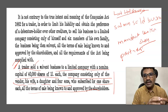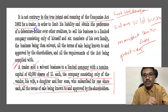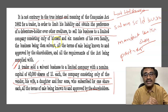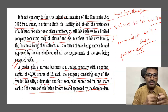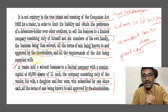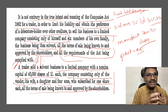Going back to the facts and the law discussed: the Privy Council held it is not contrary to the true intent and meaning of the Companies Act 1862 for a trader, in order to limit his liability and obtain the preference of a debenture holder over the creditors, to sell his business to a limited company consisting of himself and six members of his family, when the business was then solvent, all terms of the sale being known to and approved by the shareholders, and all requirements of the Companies Act fulfilled.